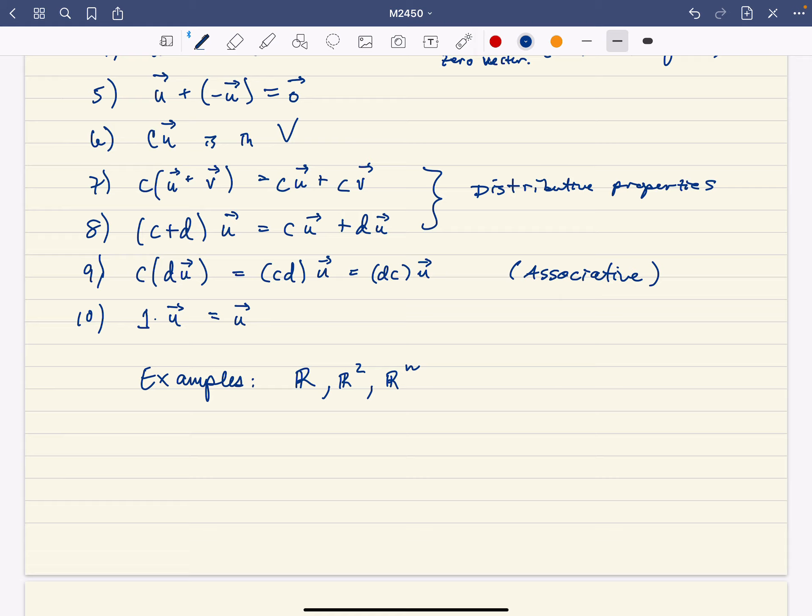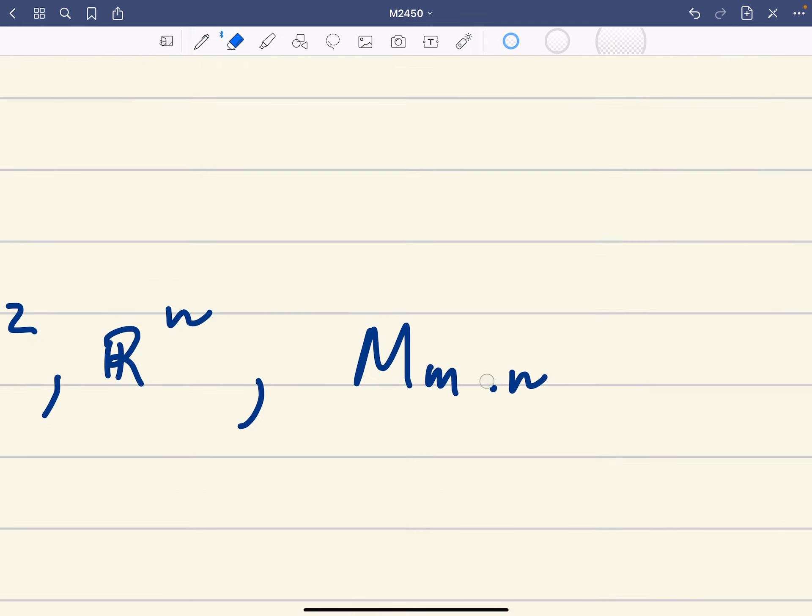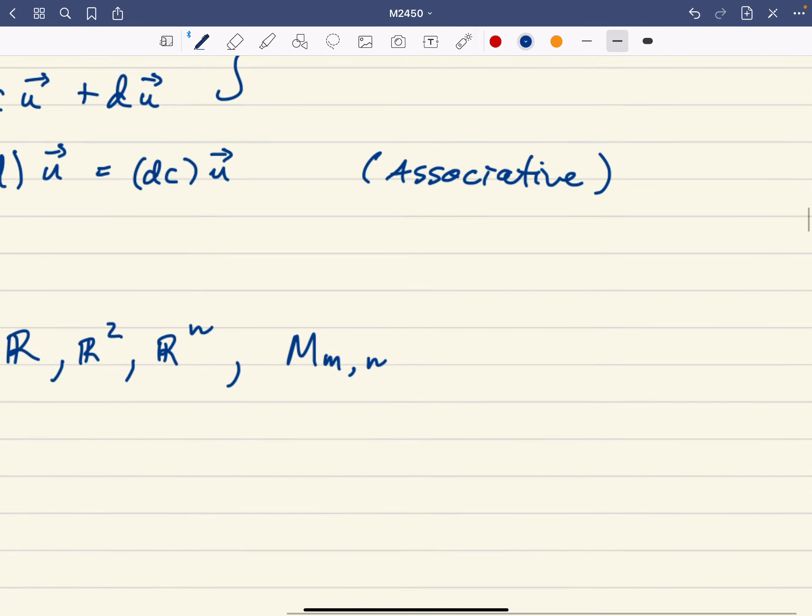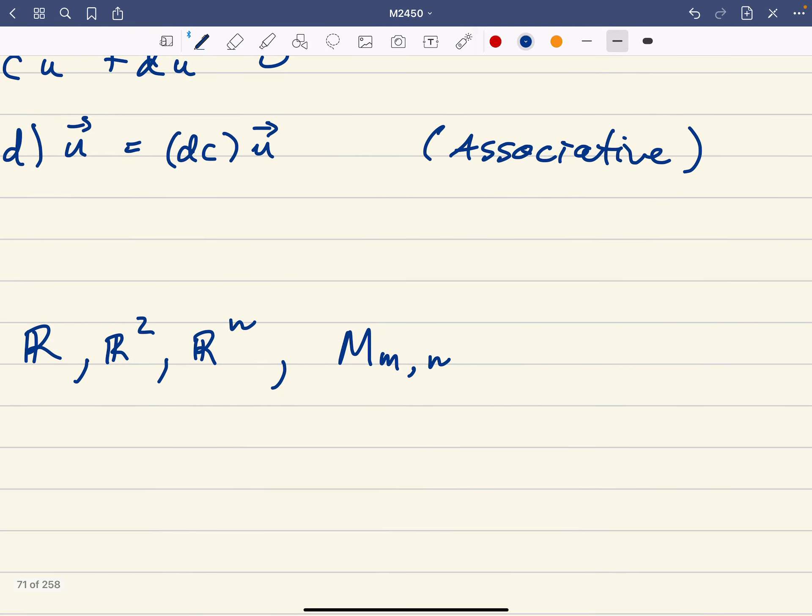A little bit more interesting examples of vector spaces would be the m by n matrices. So M sub mn, or actually, I should use the notation I like, but I should use the notation that the book uses, is capital M sub m comma n. And so this is the set of m by n matrices.